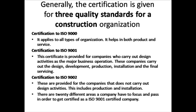Certification to ISO 9000 applies to all types of organizations and covers both products and services. Certification to ISO 9001 is provided for companies that carry out design activities as their major business operation — these companies carry out design, development, production, installation, and final servicing of their buildings. Certification to ISO 9002 is provided for companies that do not carry out design activities; it covers production and installation only. There are 20 different areas a company must focus on and pass in order to become ISO 9000 certified.